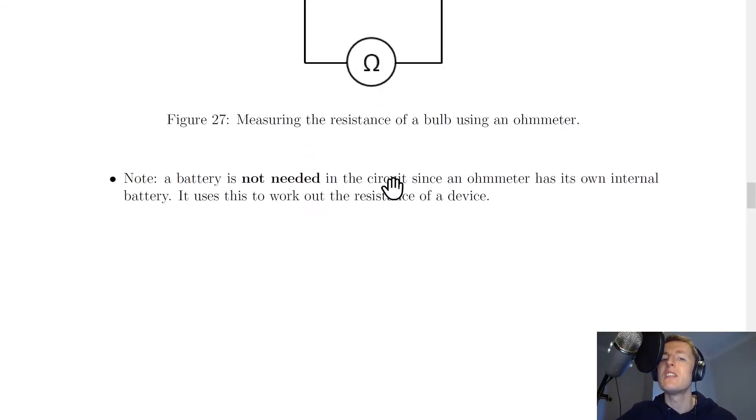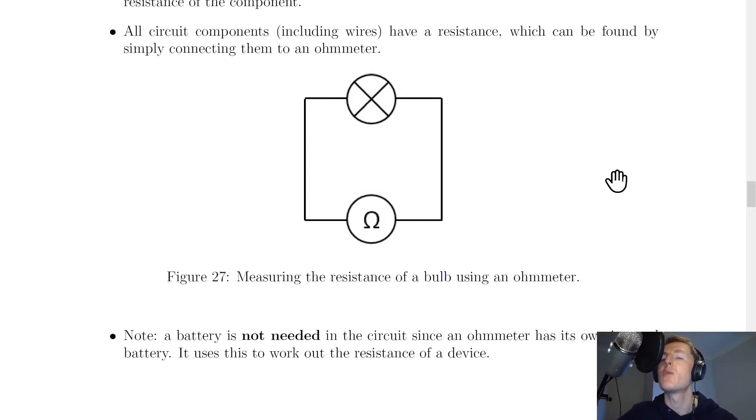And a useful thing to note is that a battery is not needed in the circuit since an ohmmeter has its own internal battery. It uses this to work out the resistance of a device. So notice in the picture how we've got no battery.